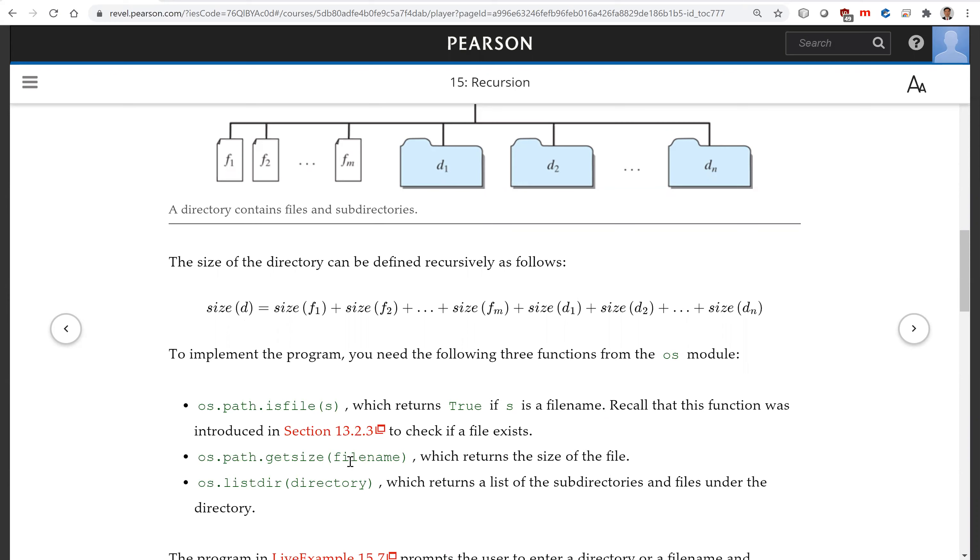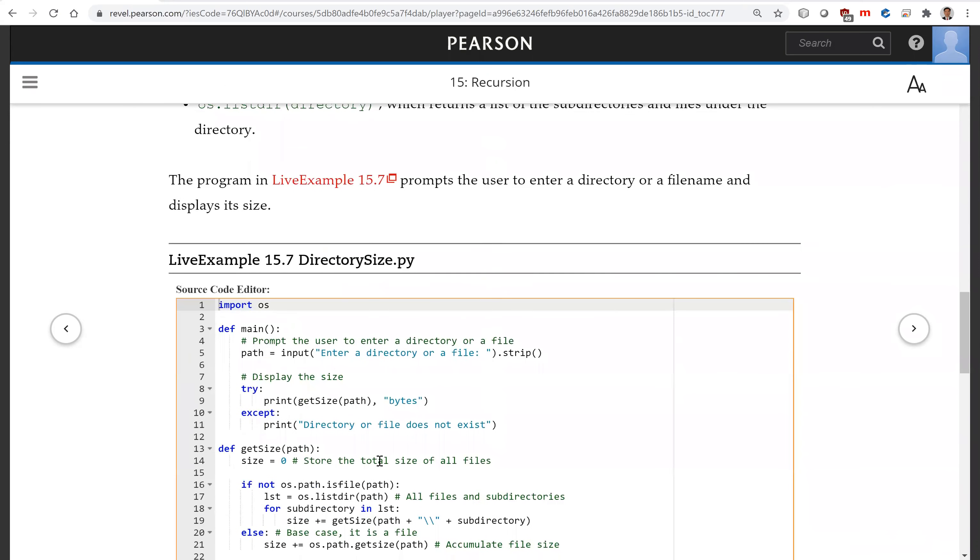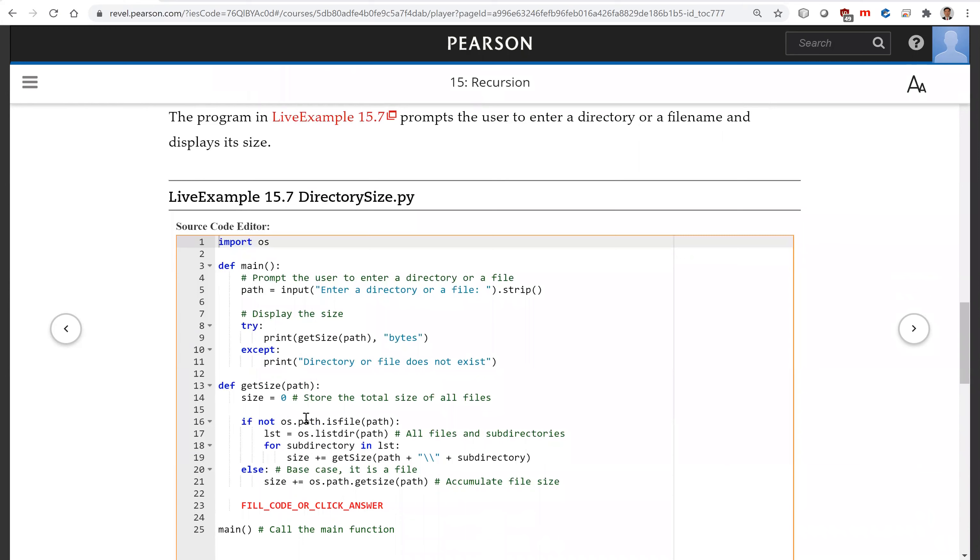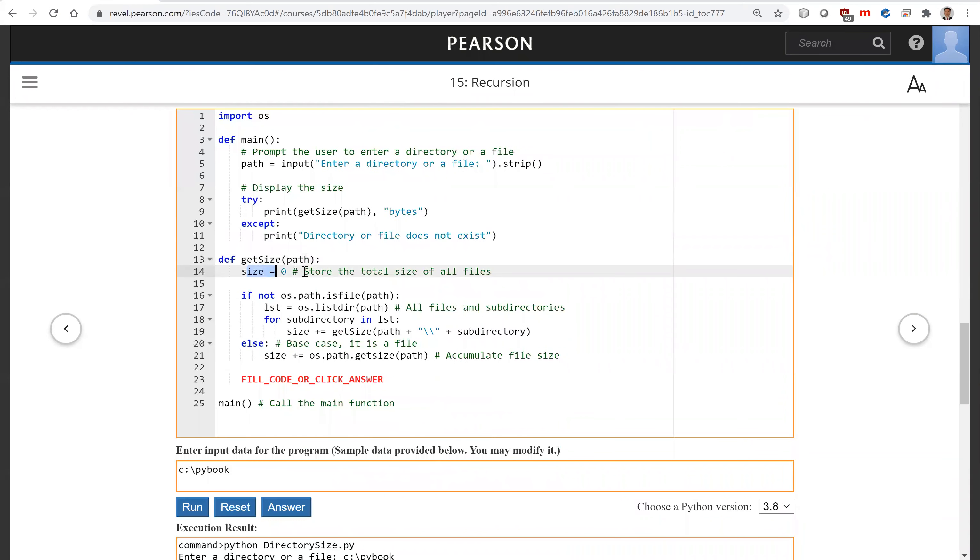So with all this, it's easy to write this program now. Here is the main, we prompt the user to enter a directory or a file. And then we're going to invoke getsize(path). So getsize(path), the size is zero, and eventually we're going to return the size. So how do we find it?